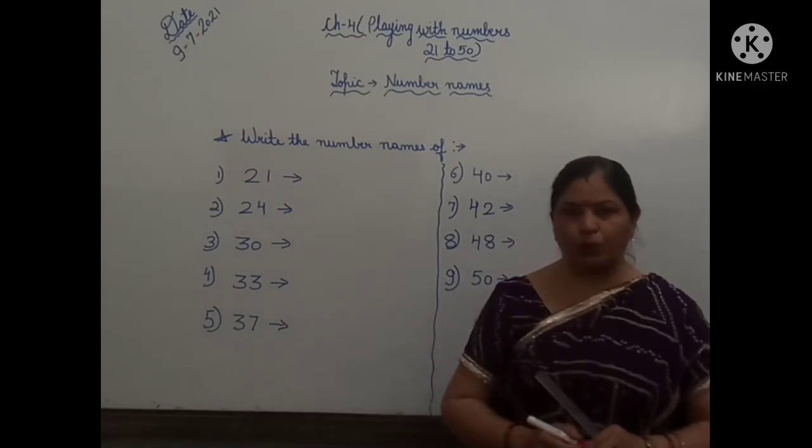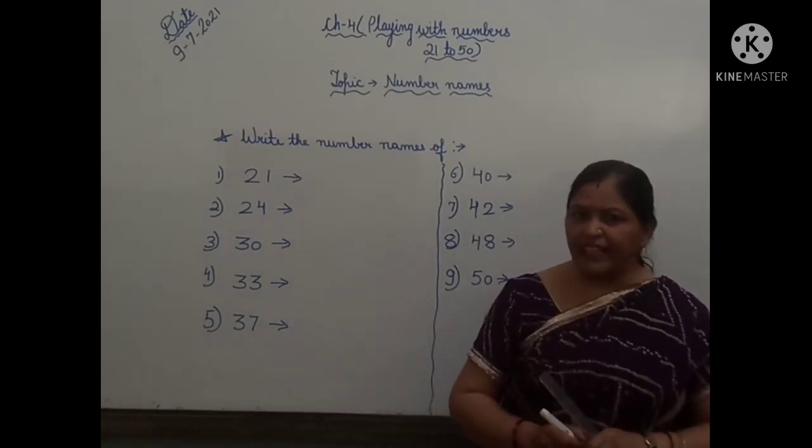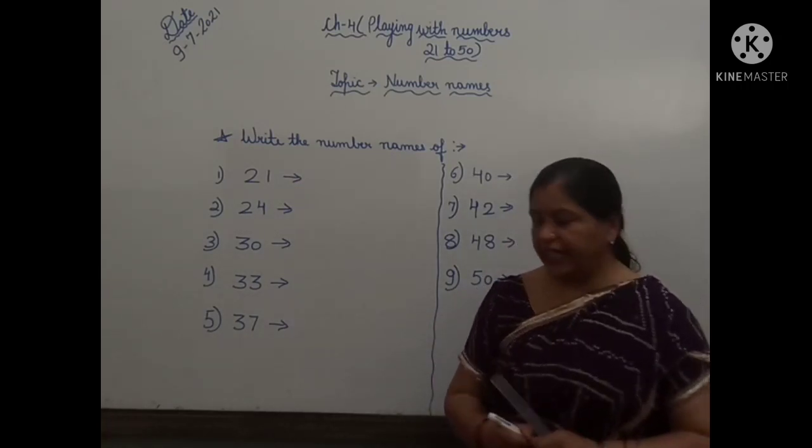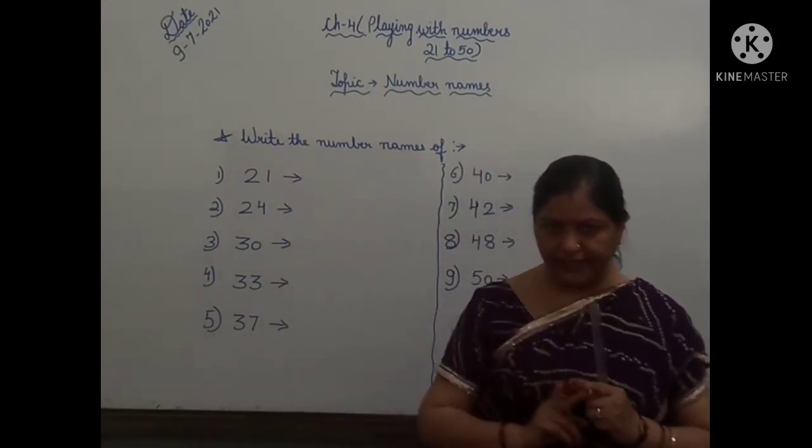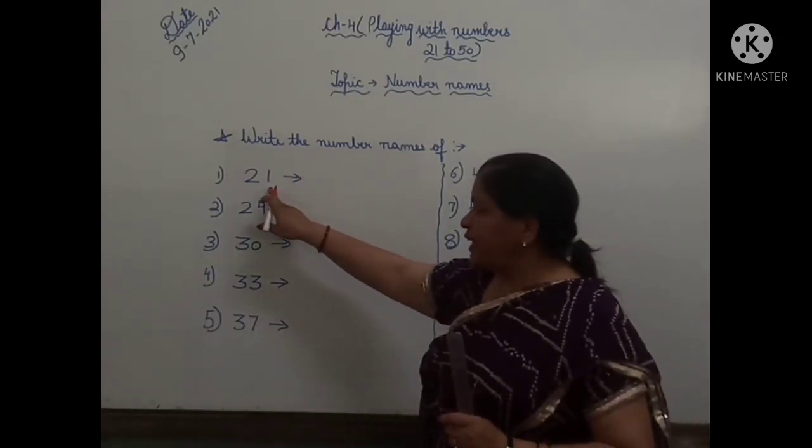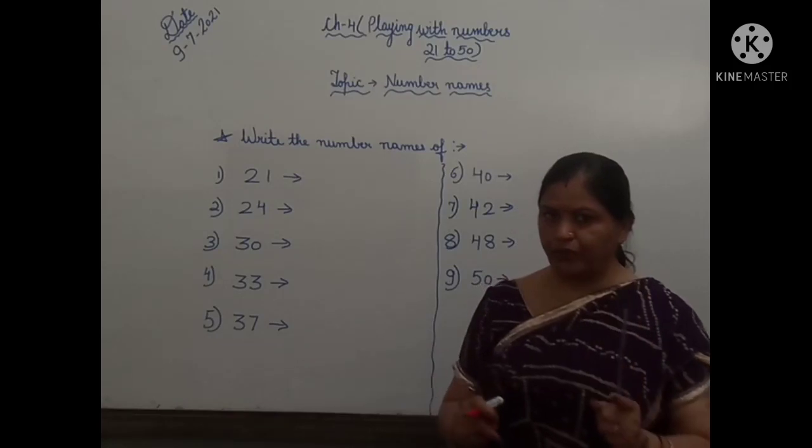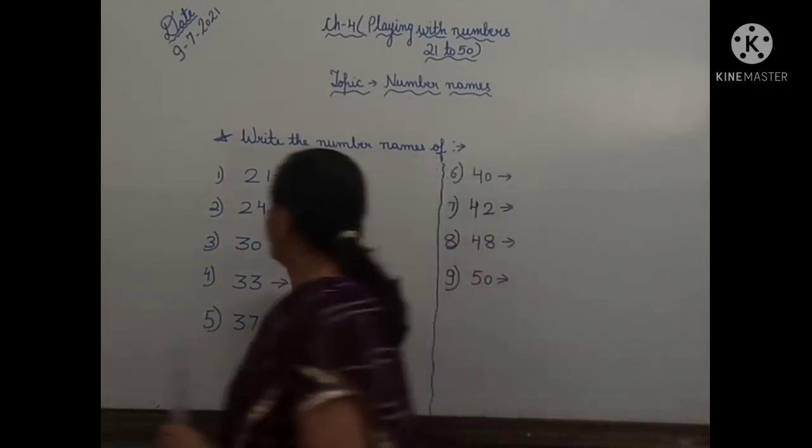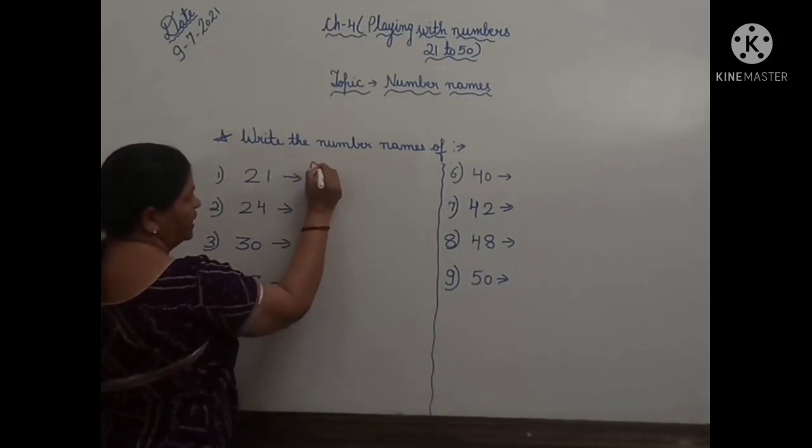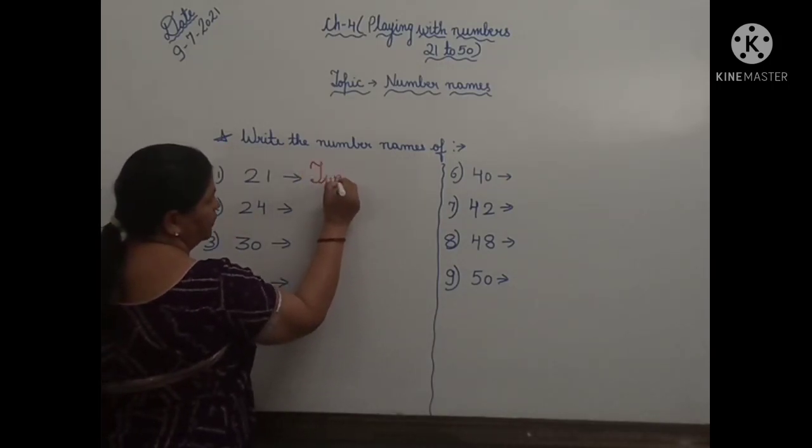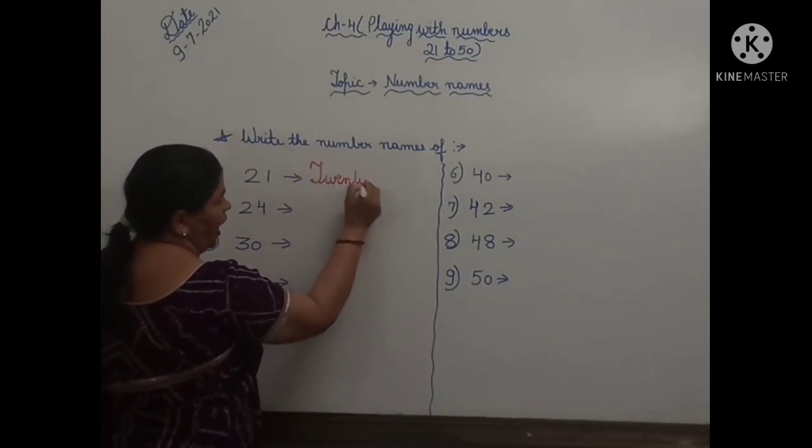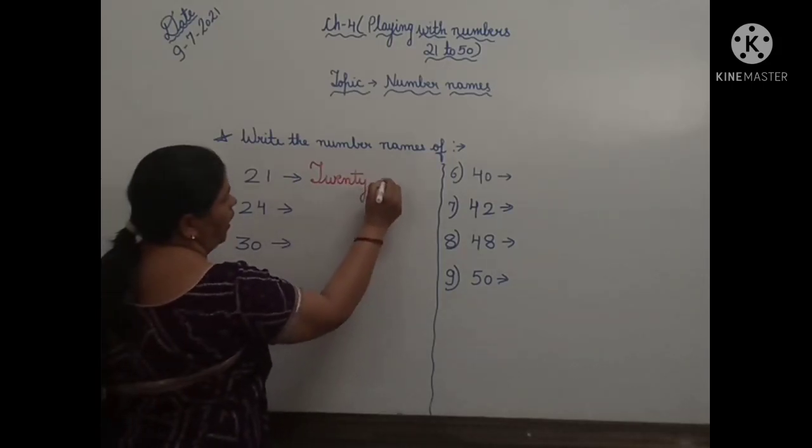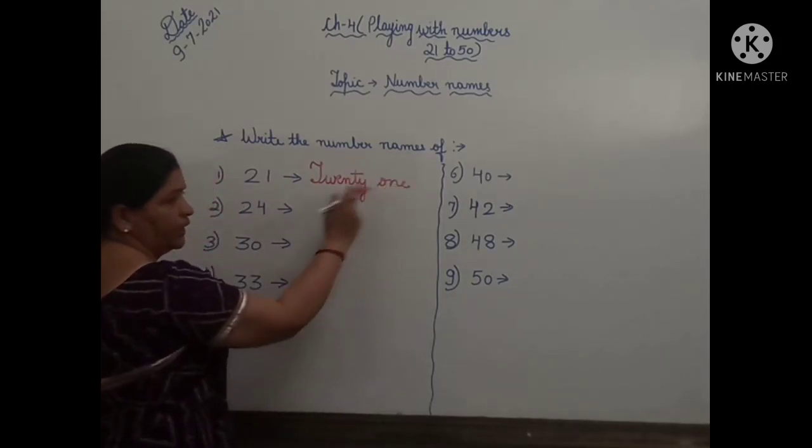So the first number is 21. Children, as you have learned the spelling of 20, so first you have to write the spelling of 20. After that, one number is there, so you have to write the spelling of 1. So 21, right? What is the spelling of 20 children? T-W-E-N-T-Y, 20. O-N-E, 1. 21.